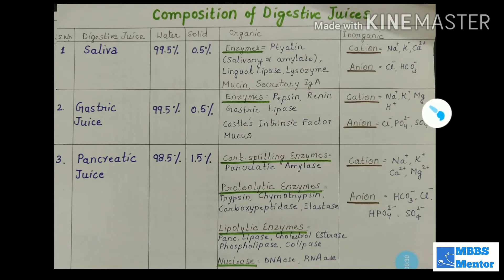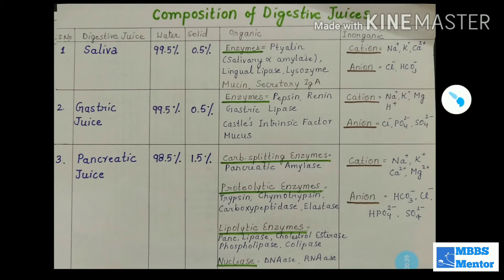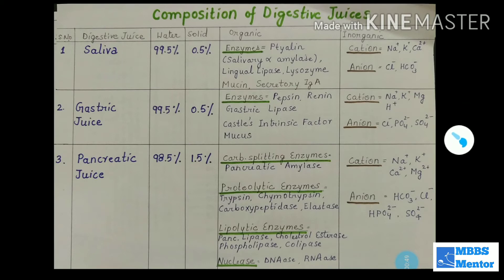Renin, spelled R-E-N-I-N, is related to the kidneys and helps in blood pressure regulation. Rennin, on the other hand, is mainly secreted in infants and acts on casein, which is the protein of milk — so rennin is a milk protein-digestive enzyme. Gastric lipase is also present, which digests fats.